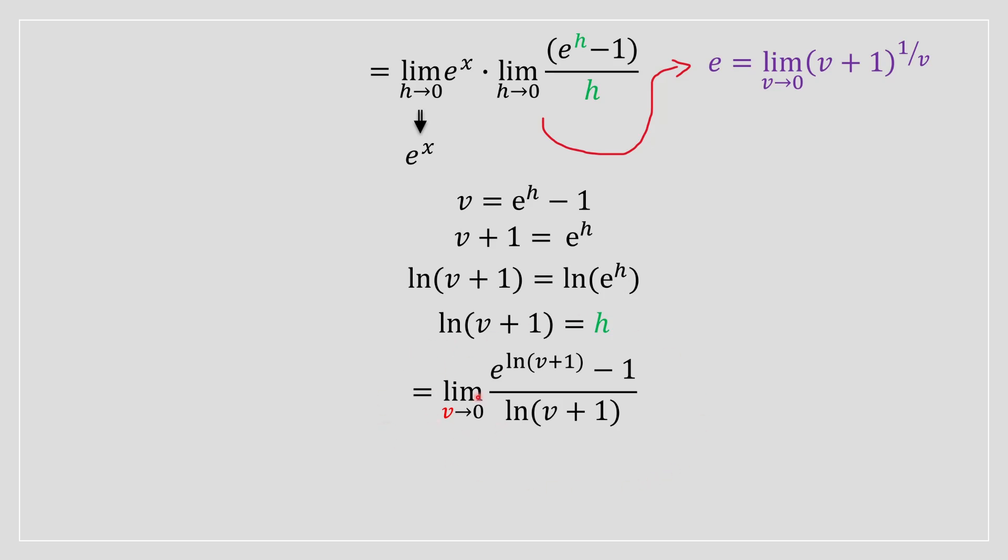Once we do that, we can rewrite the limit as the following. Notice it's not going to be h anymore because we don't have h terms in here. We've got v terms now, right? And v is proportional to h essentially. Very important.